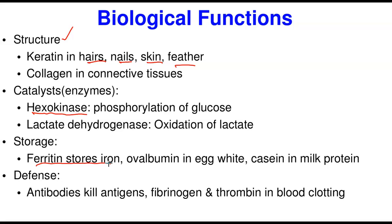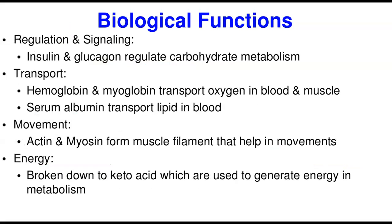Third, proteins perform important storage functions. Ferritin stores excess iron; ovalbumin is the egg white which stores albumin; casein in milk stores the casein protein. Fourth, defense: antibodies, which are proteins, kill antigens to protect the body. Fibrinogen and thrombin perform an important role in blood clotting, ensuring that when you are injured you don't bleed out.